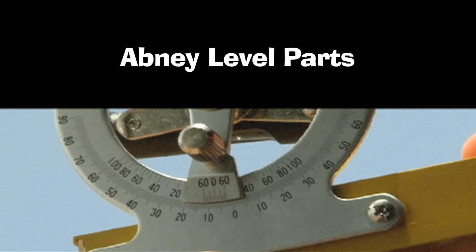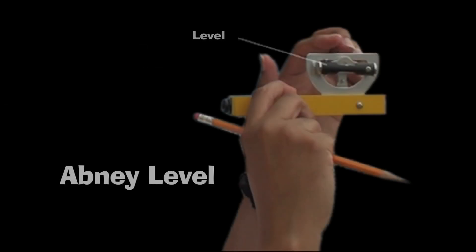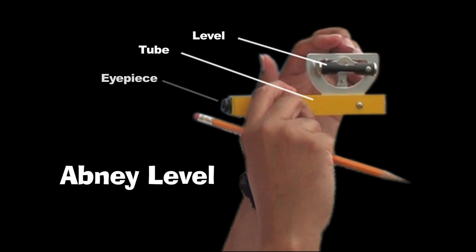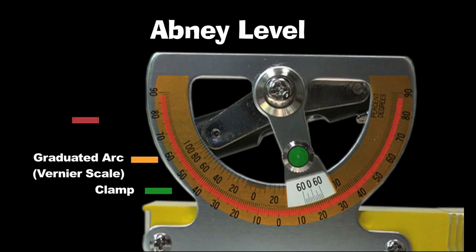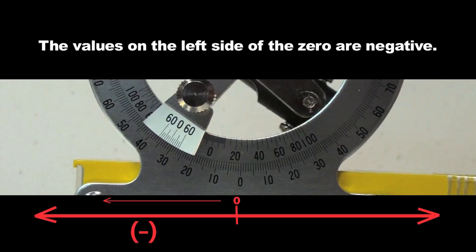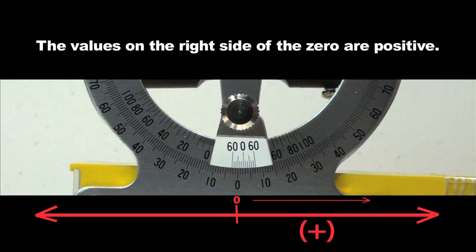The apnea level consists of several key parts: the Level Tube, Eyepiece, Clamp, Graduated Arc, Degree Scale, and Minute Scale. The values on the left side of the zero in the degree scale are negative, while the numbers on the right side of the zero are positive.